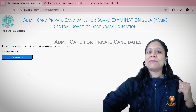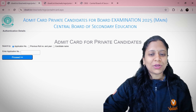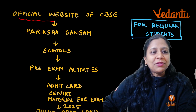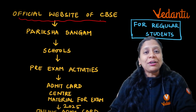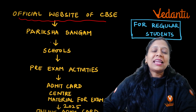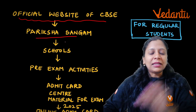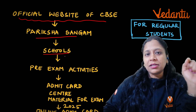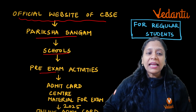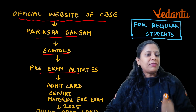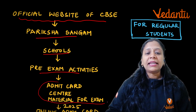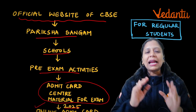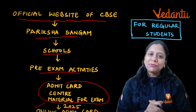Now let's see about regular students. To download the admit card, you have to open the official CBSE website. Then from there, go to Parikshasangam. Under Parikshasangam, go to the Schools option, then Pre-Exam Activities, and you will find 'Admit Card Center Material for Main Exam 2025' — click on that.